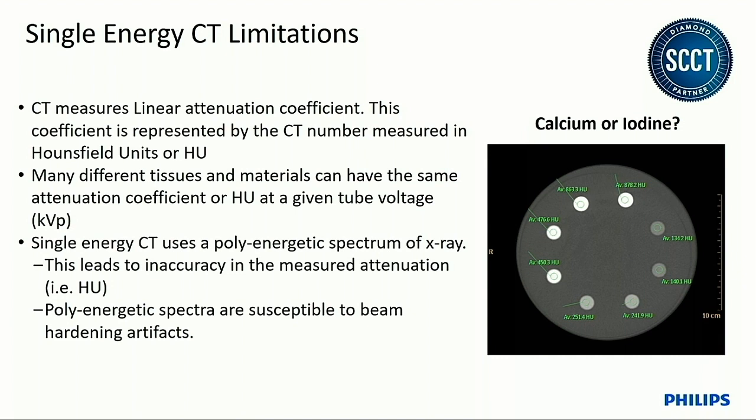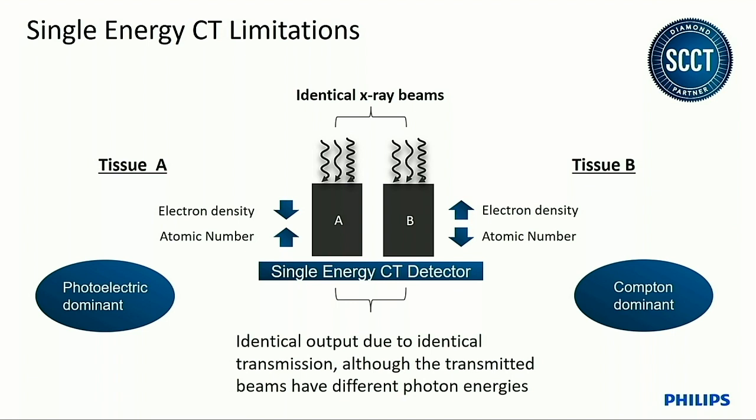Additionally, we have issues such as beam hardening, which naturally happens with your polychromatic spectra in single energy CT. It turns out, with single energy CT, there are two dominant ways that x-rays are attenuated: the photoelectric effect or the Compton effect. Depending on the material, one may be more dominant as a photoelectric or Compton scatterer, or a mix of both. If we know the ratio of photoelectric to Compton scattering, we can make some classification or determination of that material.